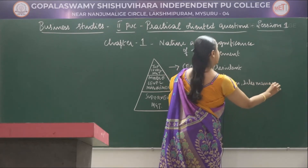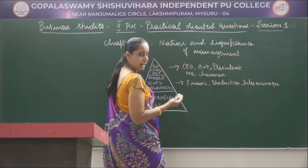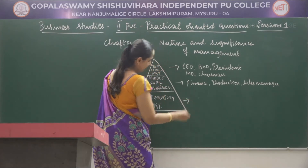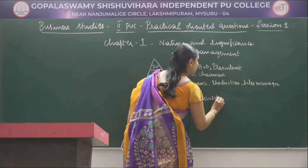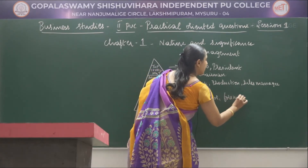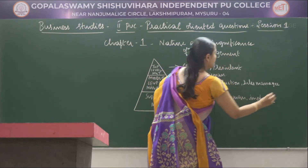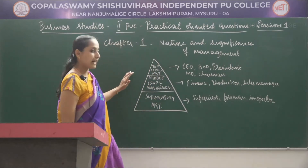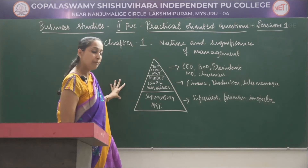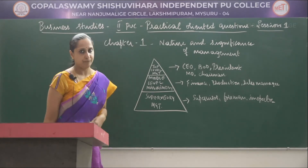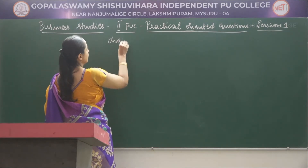Under middle level management you can see finance manager, production manager, and sales manager. Under supervisory level, you can see supervisor, foreman, and inspector. So this is the diagram showing the different levels of management. This question is asked from the first chapter as a practical oriented question.